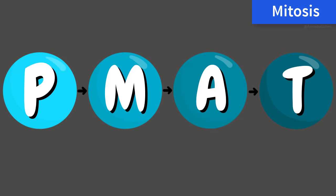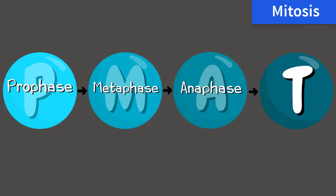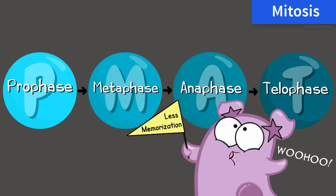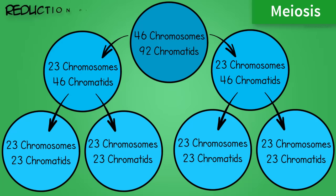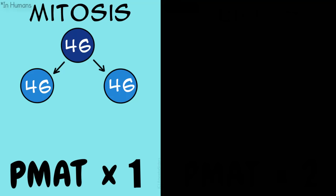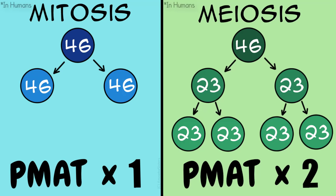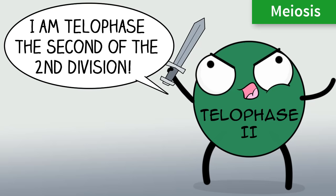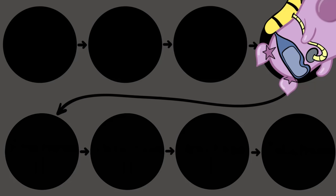Now we can move into meiosis. You might remember the mitosis stages PMAT: P for prophase, M for metaphase, A for anaphase, and T for telophase. The good news is that in meiosis you still use those terms. But because meiosis is a reduction division — going from 46 chromosomes to 23 — you actually divide twice. So instead of doing PMAT one time like mitosis, in meiosis you divide twice and do PMAT twice, putting numbers after the phases to indicate whether you're in the first or second division.